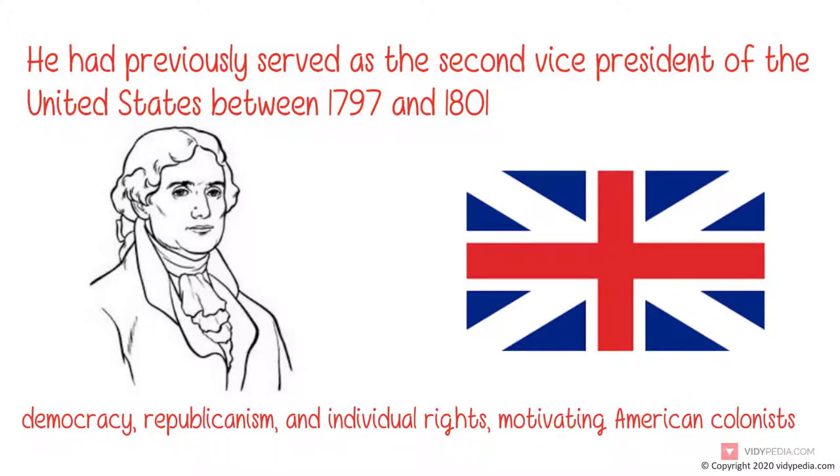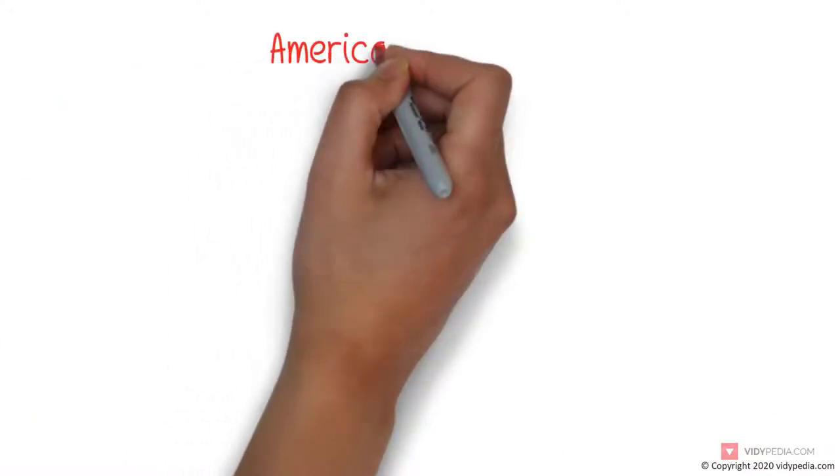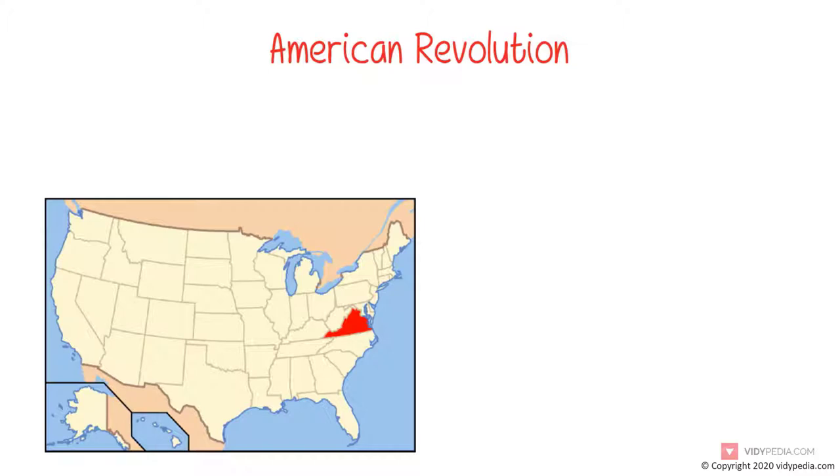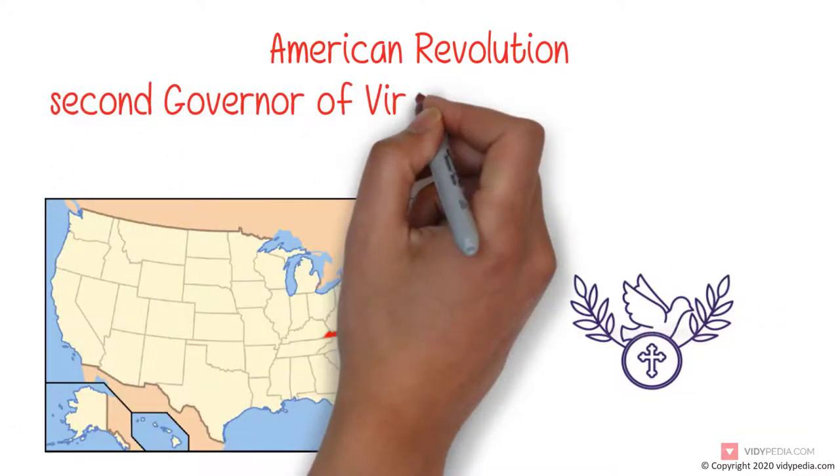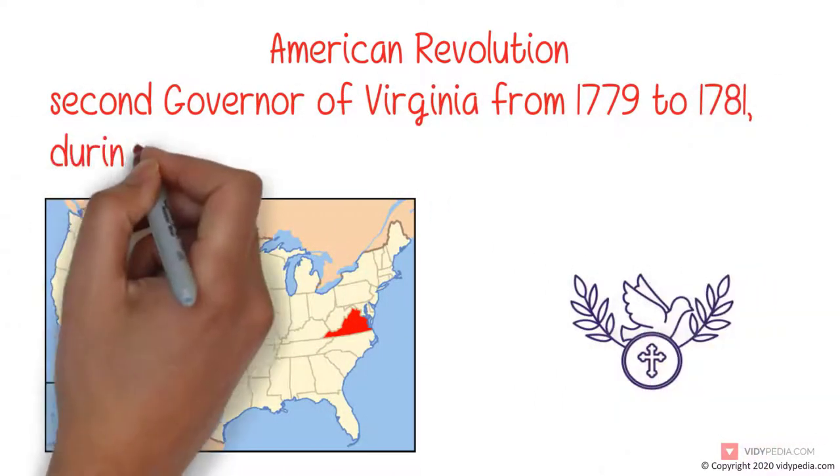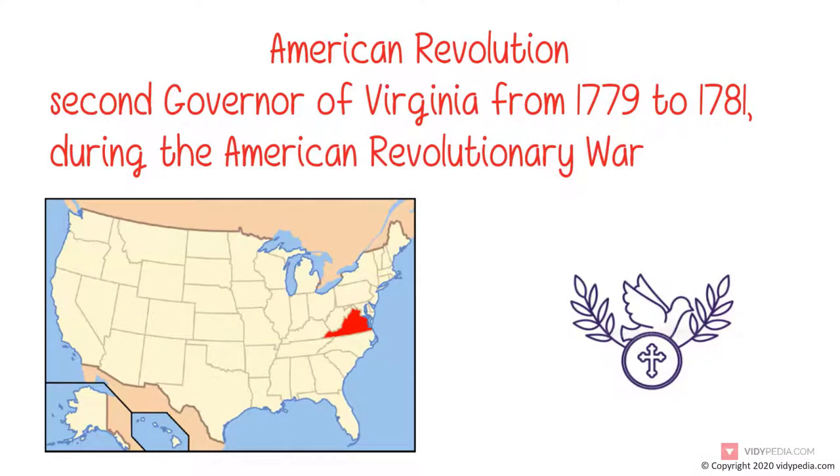He produced formative documents and decisions at both the state and national level. During the American Revolution, Jefferson represented Virginia in the Continental Congress that adopted the declaration, drafted the law for religious freedom as a Virginia legislator, and served as the second governor of Virginia from 1779 to 1781 during the American Revolutionary War.